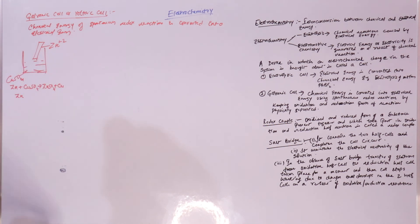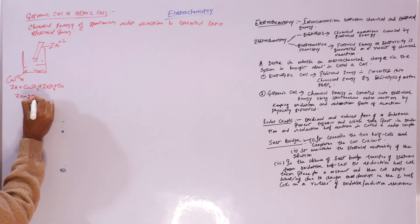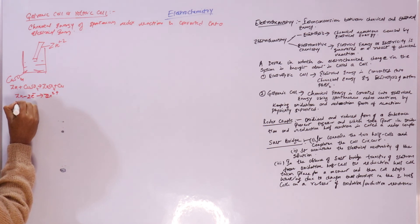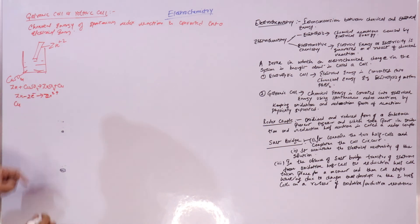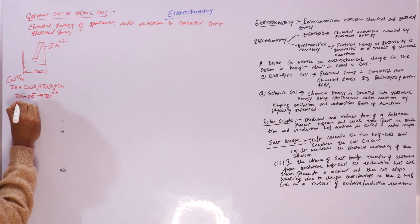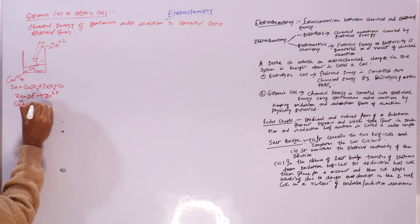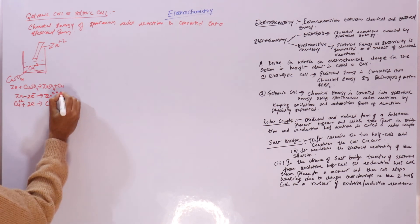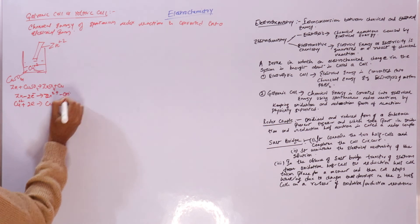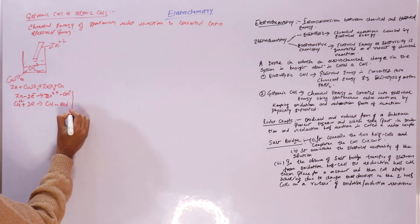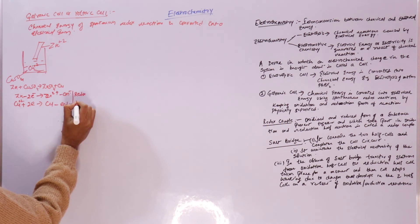These kinds of spontaneous reactions are used to make electric current. Zinc loses two electrons to form zinc ions — this is the oxidation reaction. The electrons lost by zinc are taken by copper ions in the solution to form copper metal — this is the reduction reaction. When oxidation and reduction take place together, we call it a redox reaction.